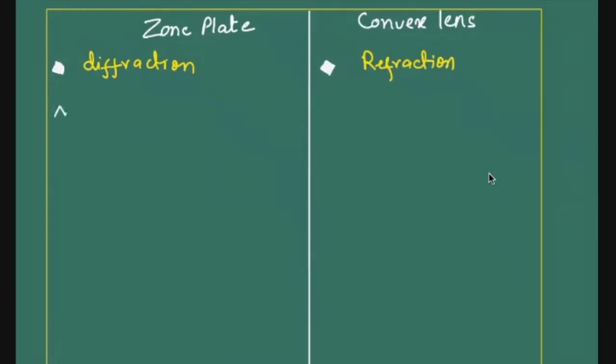In zone plate, we are getting virtual as well as real image, whereas convex lens here, remember here we are talking about a plane wave front hitting either convex lens or zone plate. So obviously in convex lens, the nature of image would be real.